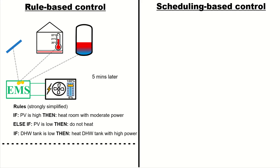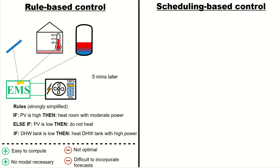This is simplified rule-based control. It has some pros and cons: it's easy to compute and no model is necessary. But at the same time it's not optimal and it's difficult to incorporate future forecasts.